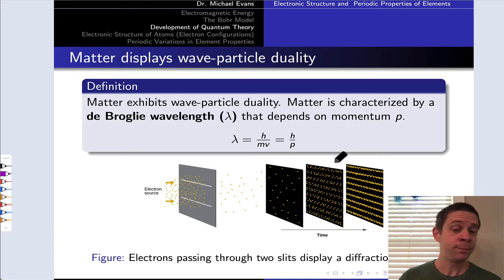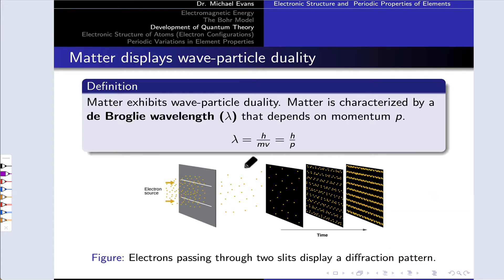One experiment that provided evidence that matter has wave-like properties was performed by Davison and Germer, and the basic setup is shown here. The idea is we take an electron beam, and we essentially try to diffract it by passing that beam through a series of closely spaced slits.